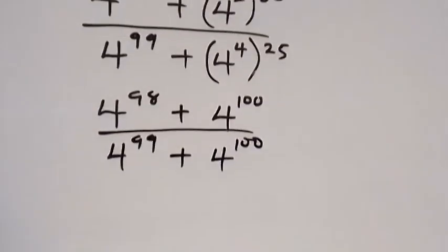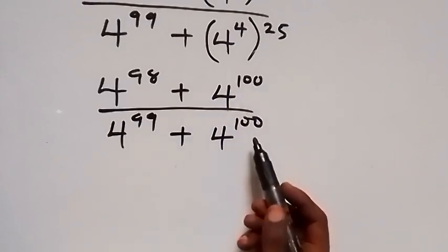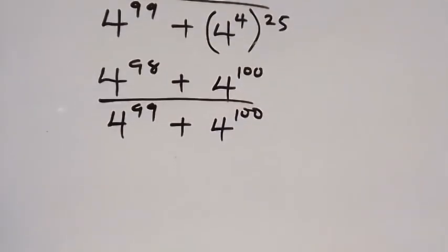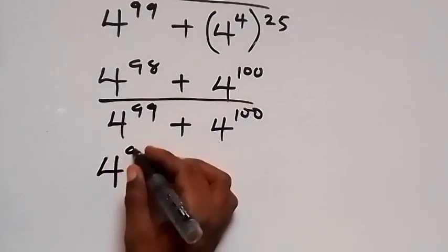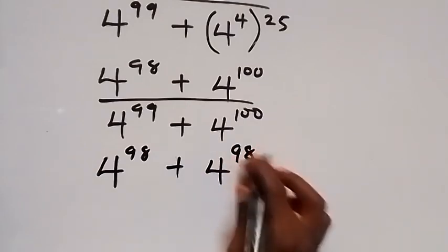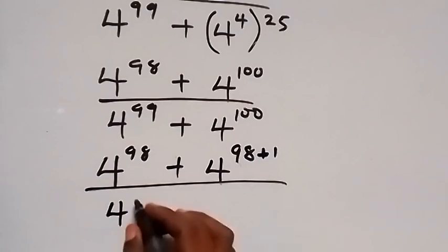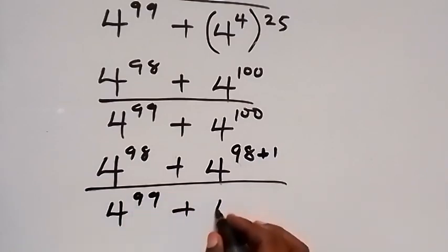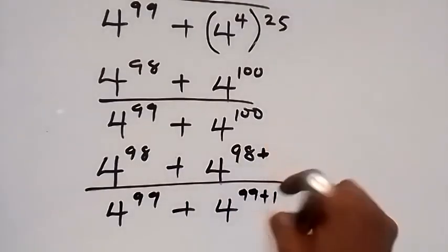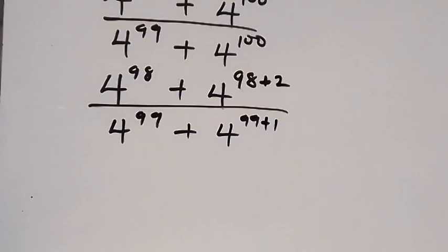We can separate the exponent 100 as 98 plus 2, and similarly separate 99 as 99 plus 1. This gives us 4 raised to power 98 plus 4 raised to power 98+2 in the numerator, divided by 4 raised to power 99 plus 4 raised to power 99+1 in the denominator.